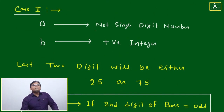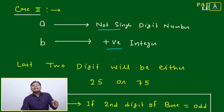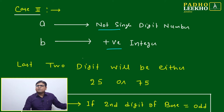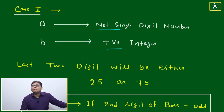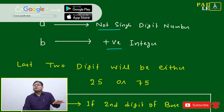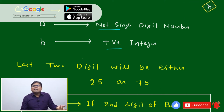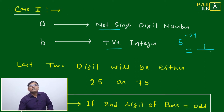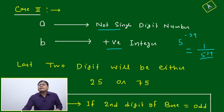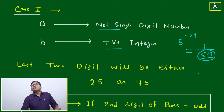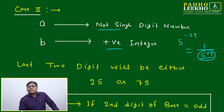Case 2 is where a is not a single digit number and b is a positive integer. Whether a is a two-digit, three-digit, or any number of digits, the shortcut technique will be the same. We are not discussing negative integers because for something like five to the power minus 39, we have to convert it to one over five to the power 39, so the direct application does not apply.